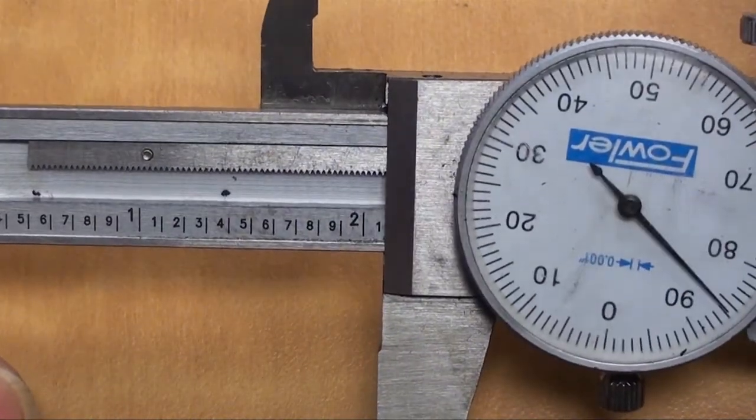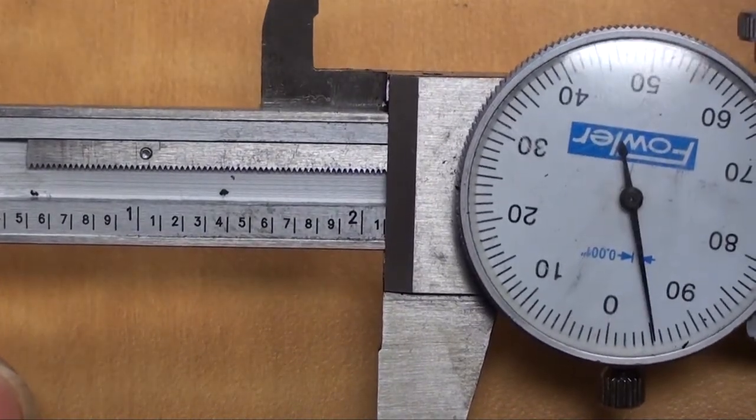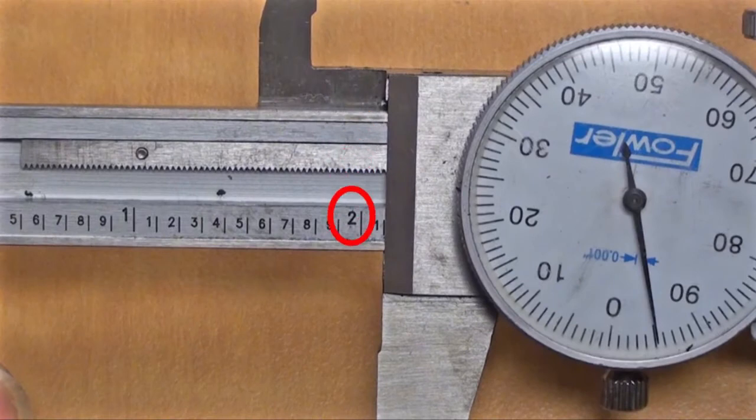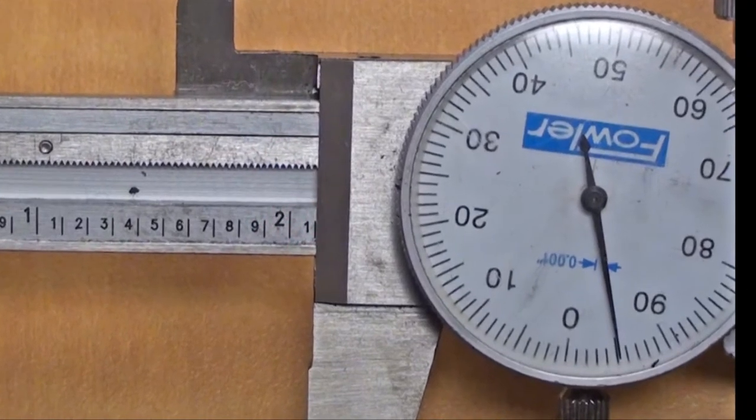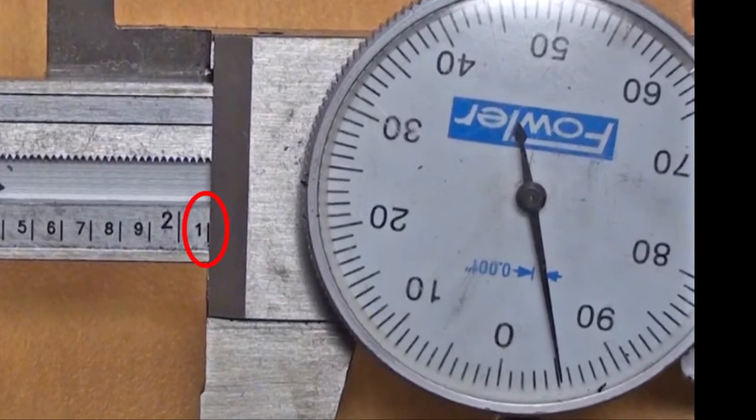The slider position has now been moved to a value slightly greater than 2 inches. This is evident by the large 2 to the left of the trailing edge. Zooming in reveals a small portion of the 100 thousandths of an inch line at the trailing edge.